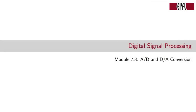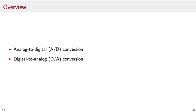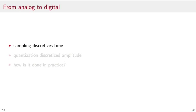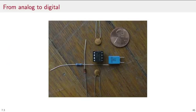Hi and welcome to module 7.3 of Digital Signal Processing. In this module, we will talk about analog to digital and digital to analog conversion, trying to understand how these things are done in practice. We have seen that sampling discretizes time and quantization discretizes amplitude, but how is it done in practice? The answer is cheaply and in a very compact way.